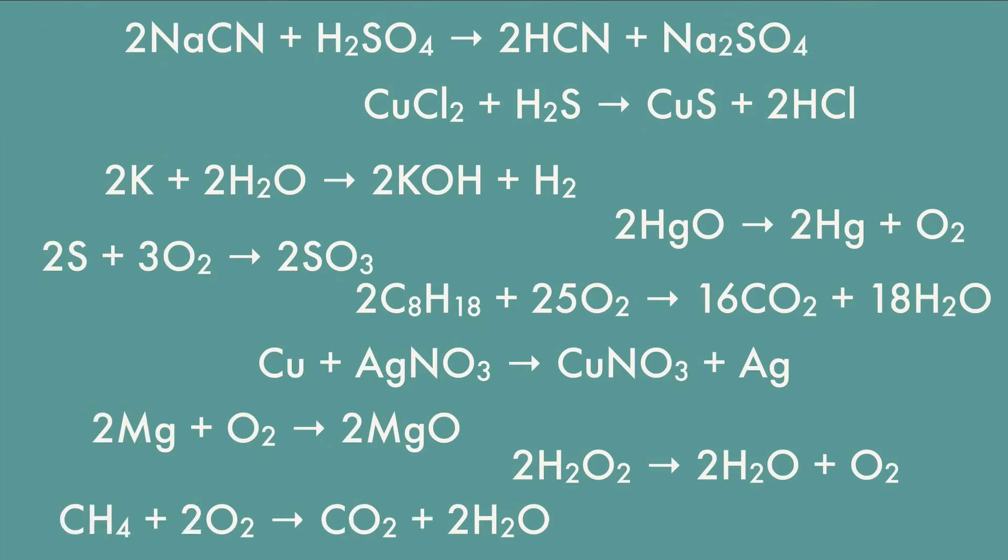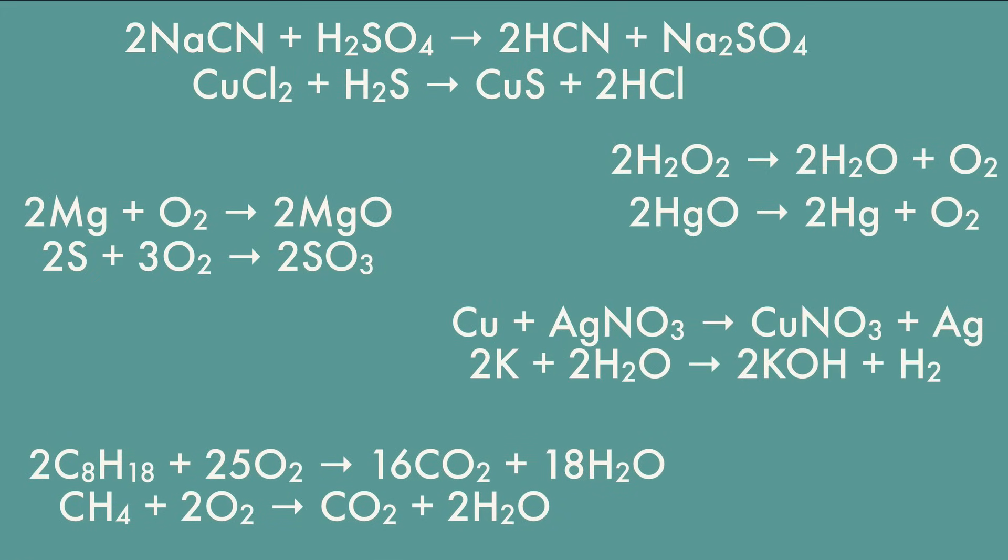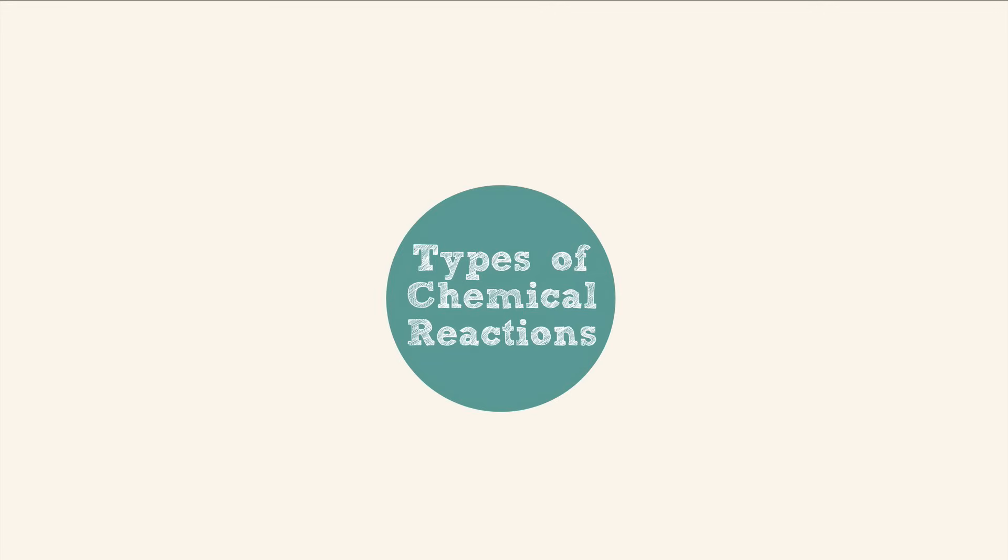At first glance, these chemical reactions might seem like a mess of information, but there are patterns among them. It's helpful for chemists to sort all the chemical reactions into categories so that they can make predictions about how chemicals might react. There are five main types of chemical reactions.